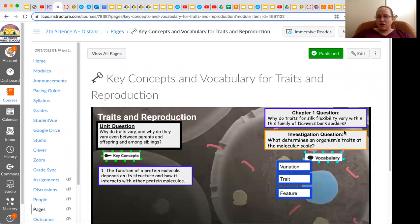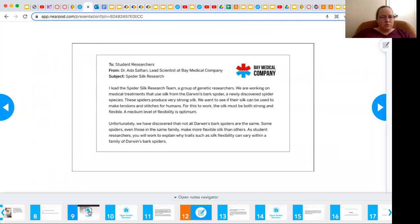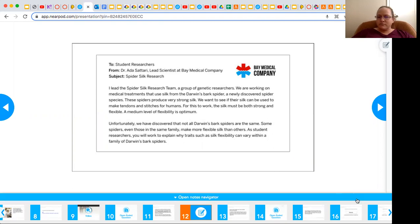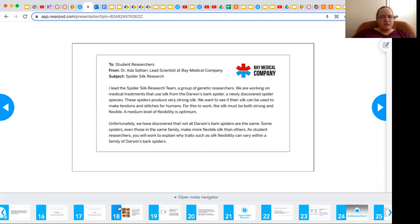So the question that we're really focusing on, that you're going to be introduced to in the lesson is, why do traits for silk flexibility vary within this family of Darwin's bark spiders? So you're going to be watching the video to begin with on nine. And then this is going to introduce that question about how come traits such as silk flexibility can vary within a family of Darwin's spiders.